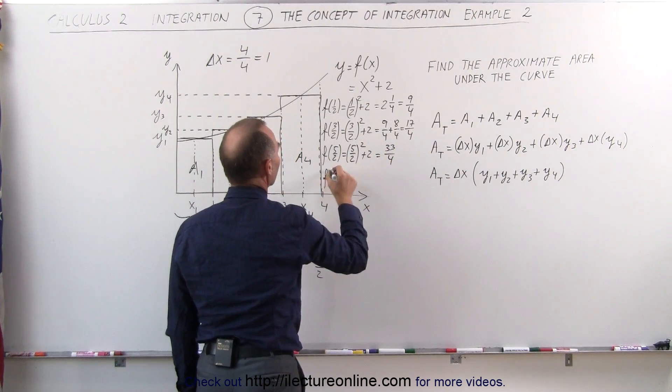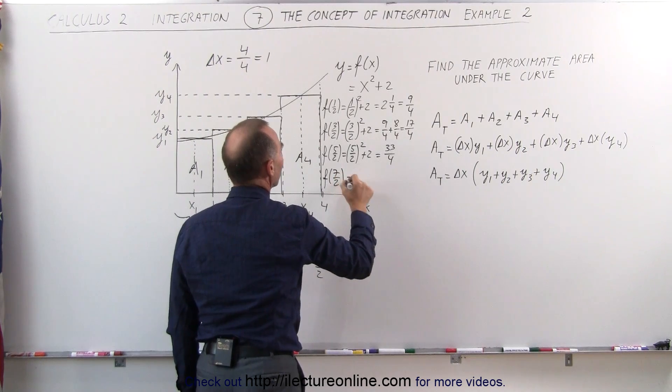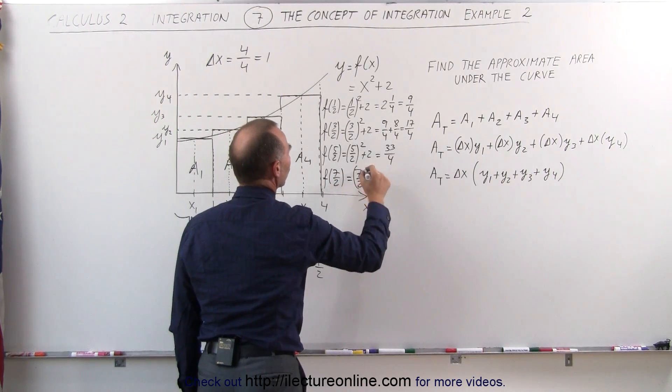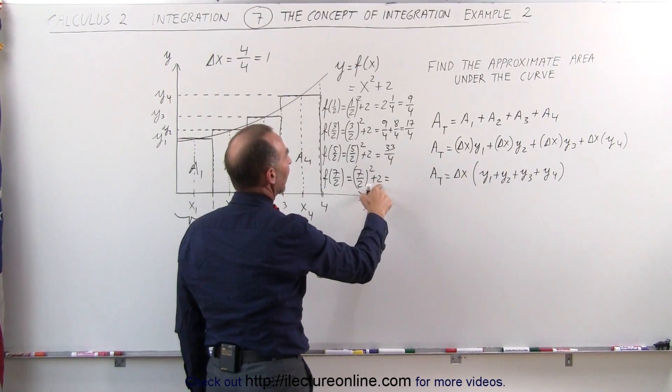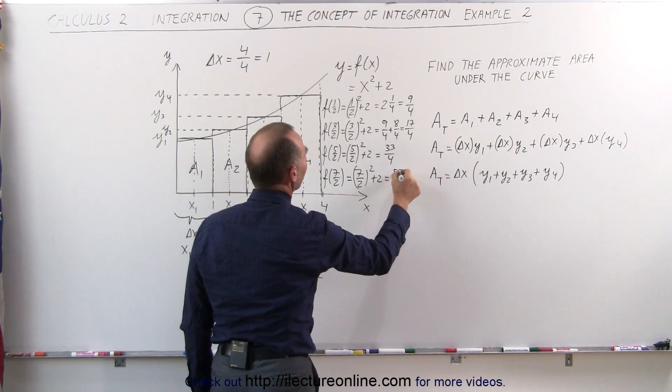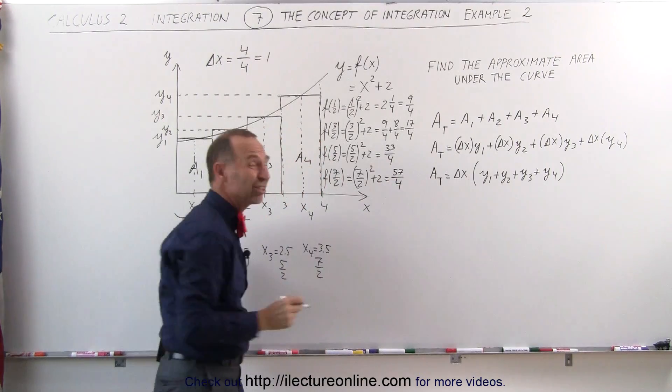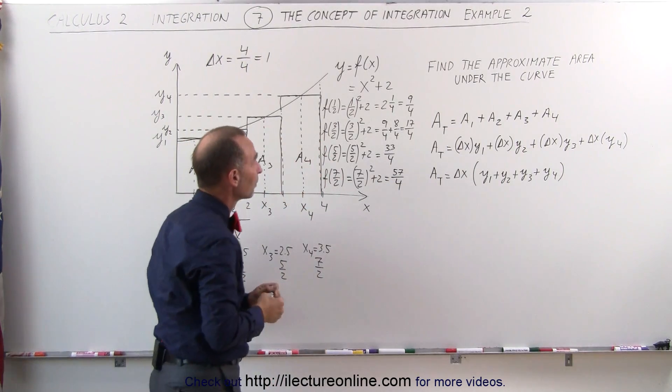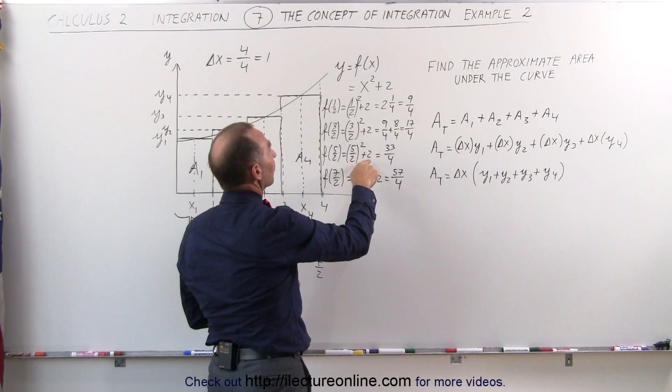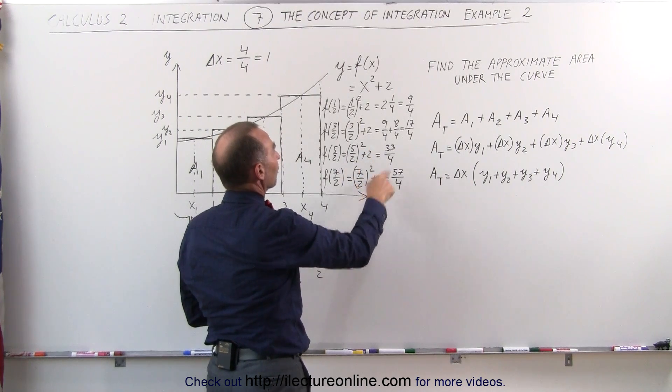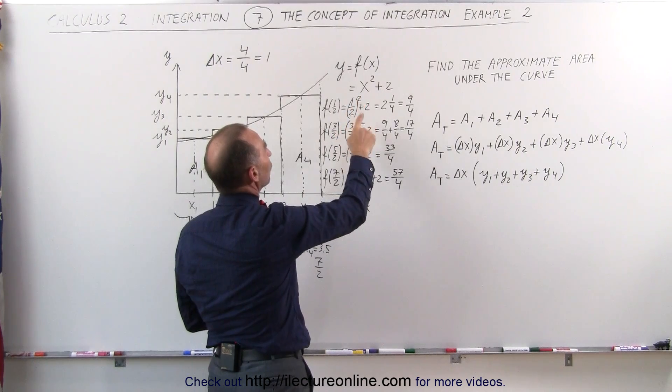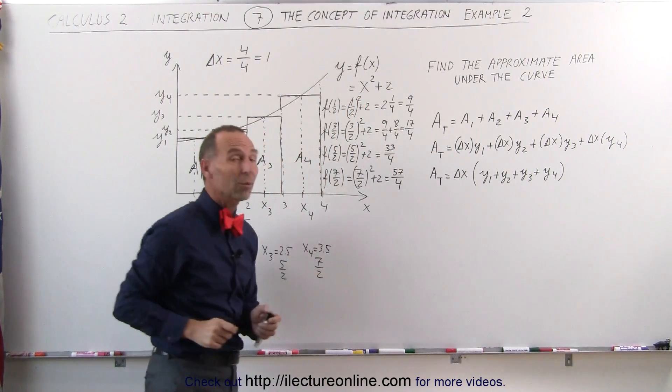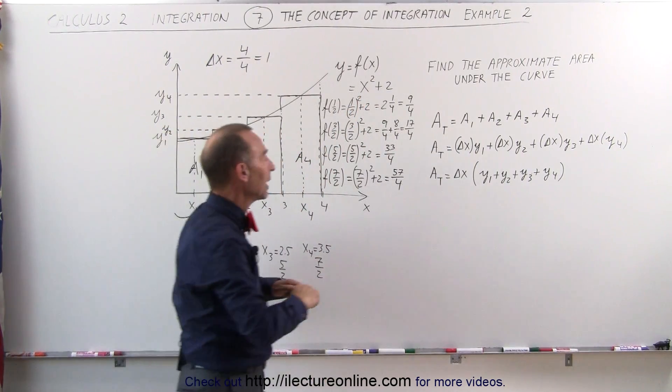And finally, the function evaluated at 7/2 is equal to (7/2) squared plus 2, which is equal to 49/4 plus 8/4, that would be 57/4. Let me quickly check to make sure I did this correctly. 25 plus 8 is 33, 49 plus 8 is 57, 9 plus 8 is 17, and 1 plus 8 is 9. Okay, that is correct. Now let's plug in the values to see what we get.